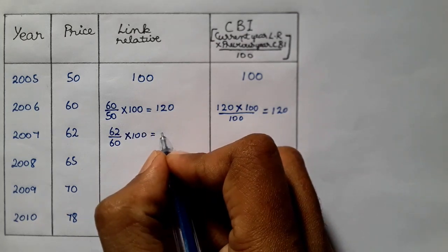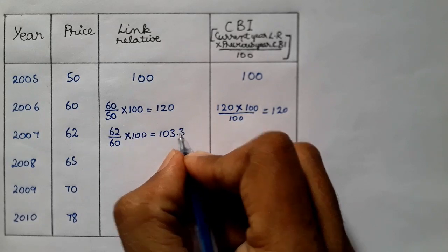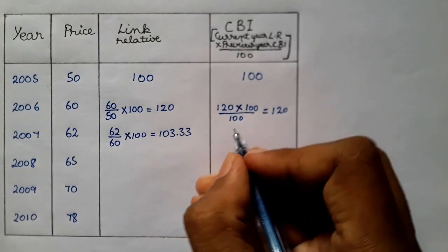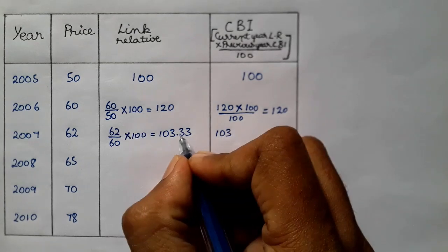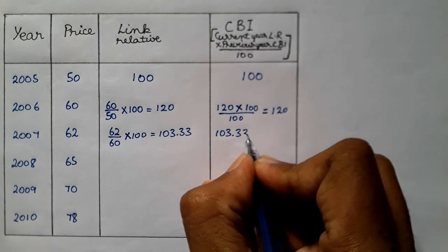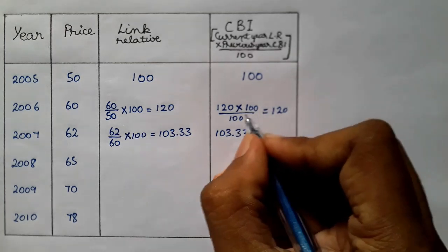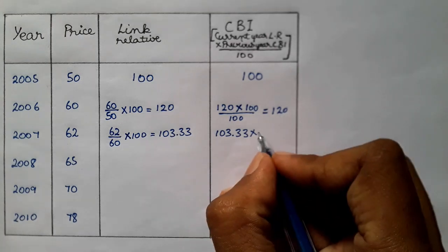Now the chain-based index is 103.33, so 103.33 into this previous answer is 120, so 120 divided by 100. If we solve this is 124.